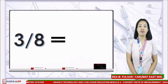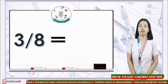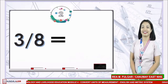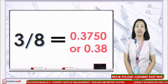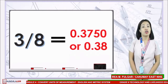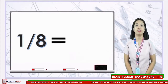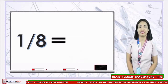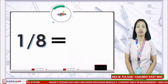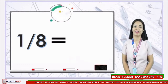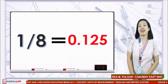Question number 4: three-eighths — your timer starts now. If your answer is 0.375 or 0.38, you are doing good! And for our last number, one-eighth — 5 seconds starts now. If your answer is 0.125, then you are correct. Great job!